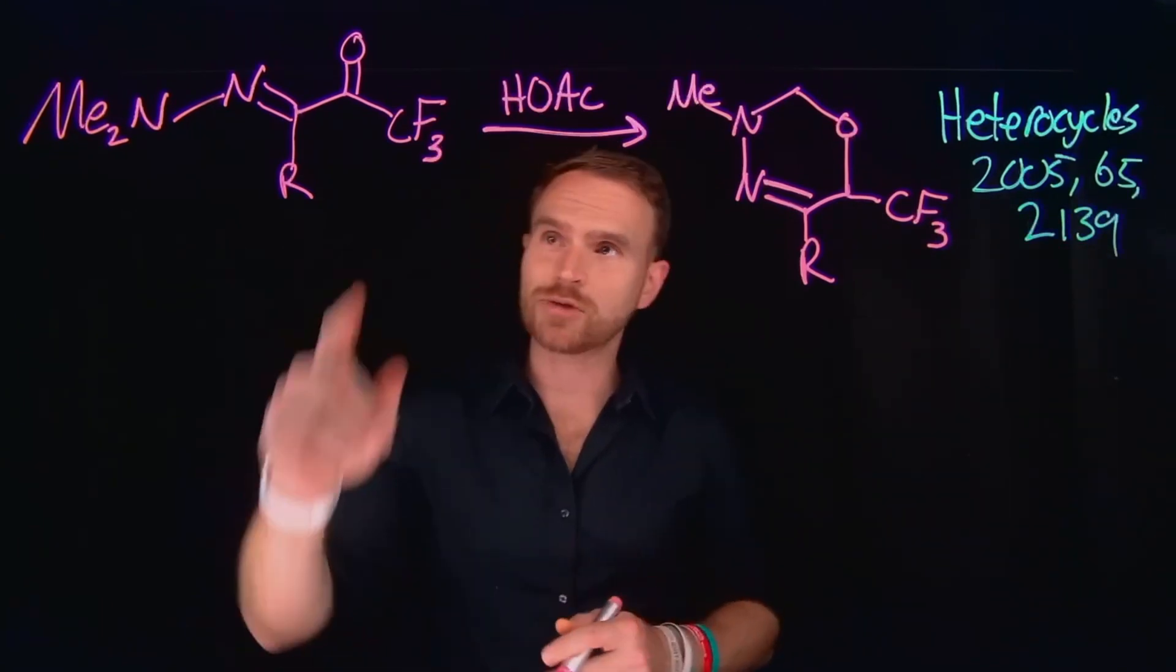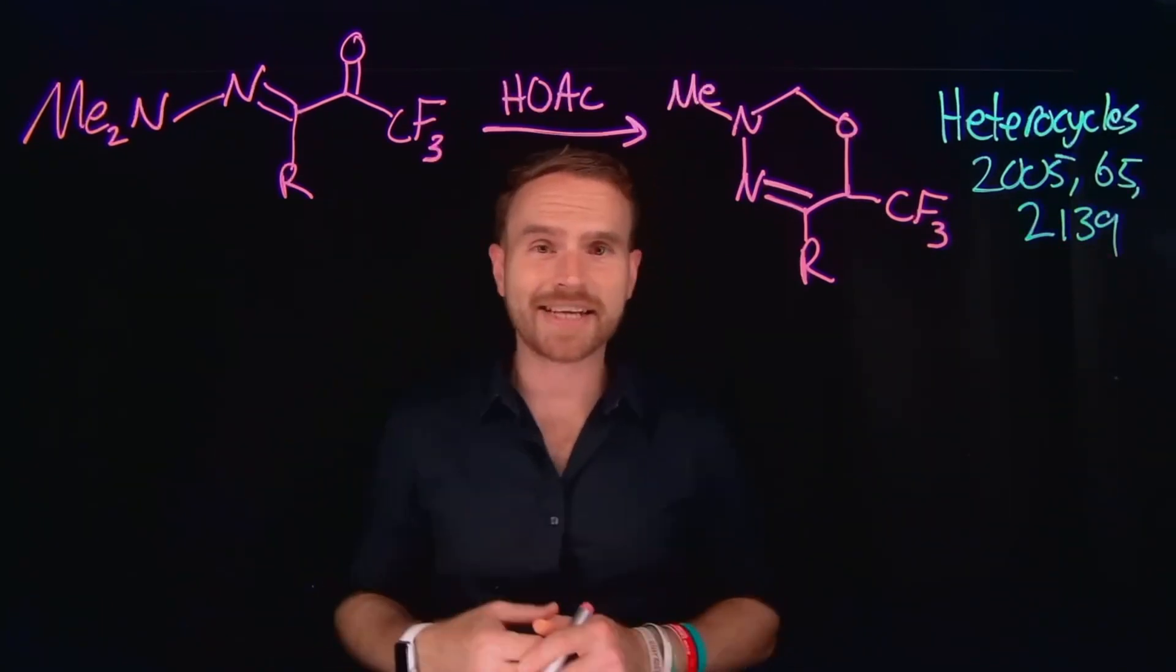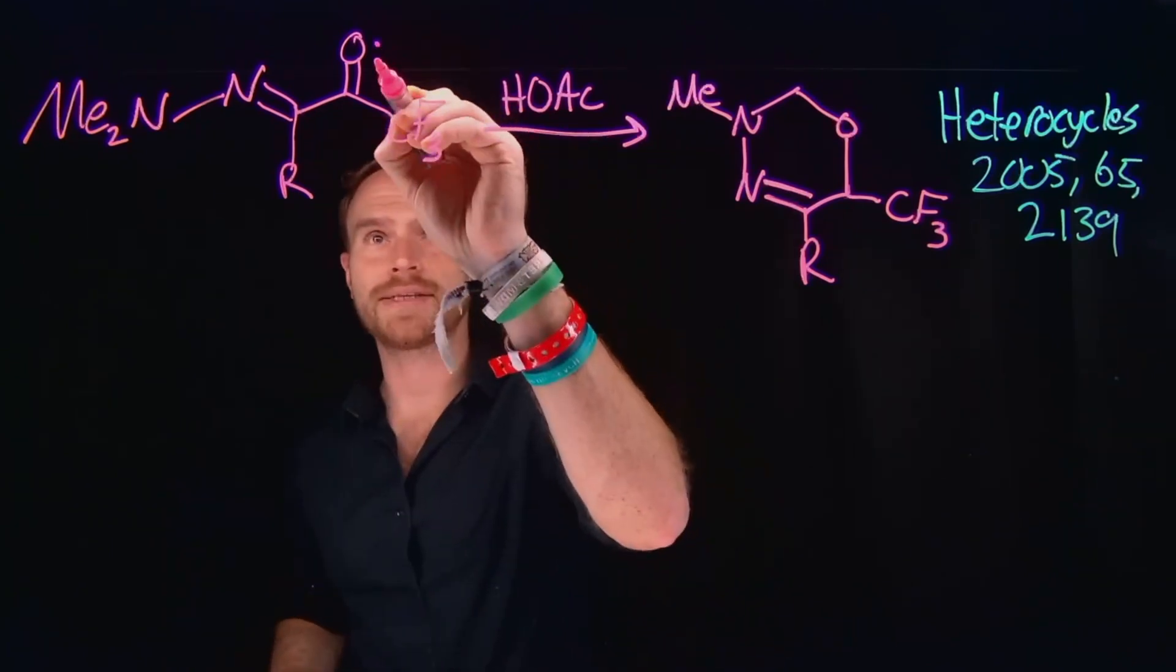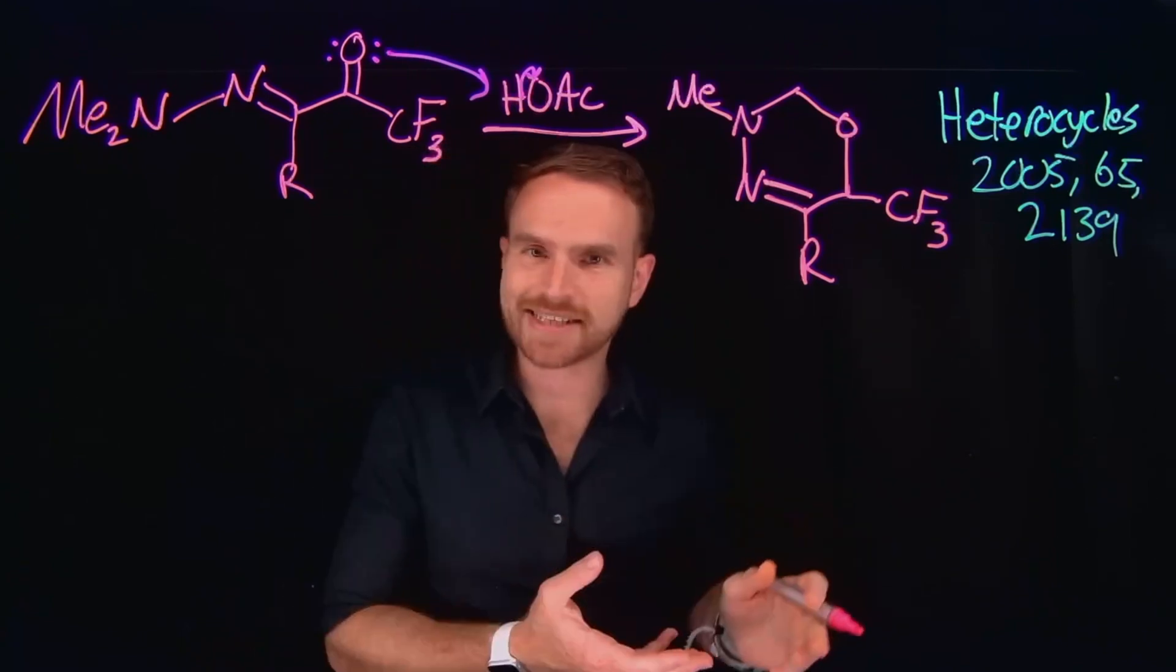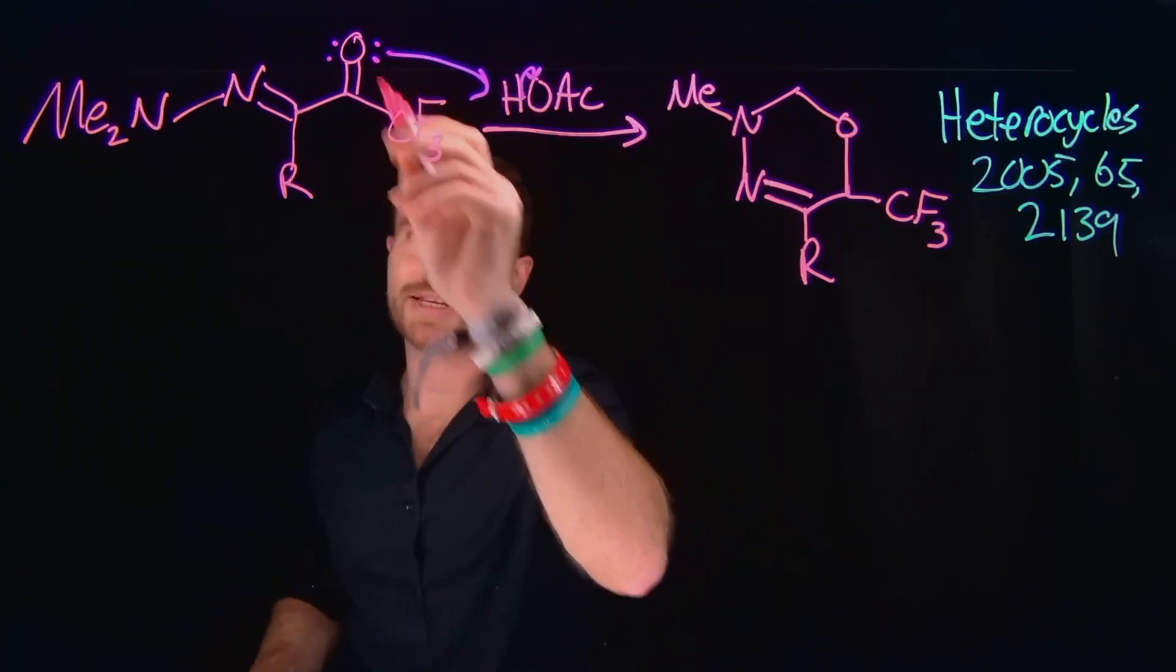And as you might have predicted, since we have a carbonyl compound and acetic acid, the first step is going to be to protonate this oxygen. So acetic acid can be used as a proton source to generate acetate as the conjugate base and protonate this position.